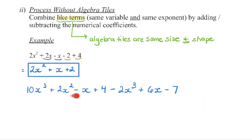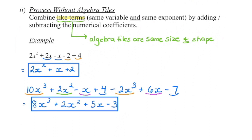Let's look at one more algebraic expression and find the like terms — same variable, same exponent. We have x cubed and another x cubed, so color coordinate those. We have one x squared with no match, so it stays on its own. We have negative 1x and 6x. We have constants 4 and negative 7. Combining: 10 minus 2 is 8x cubed; 2x squared stays; negative 1 plus 6 is positive 5x; and 4 minus 7 is negative 3. Notice we line them up in order of degrees: degree 3, degree 2, degree 1, degree 0.